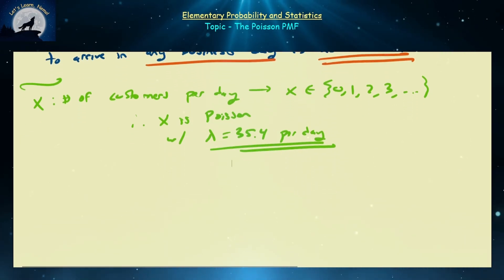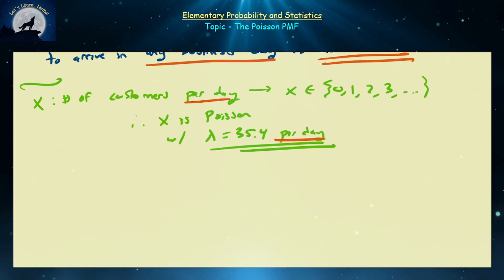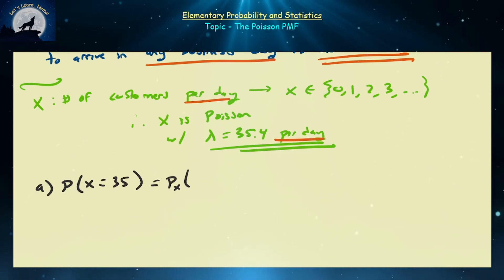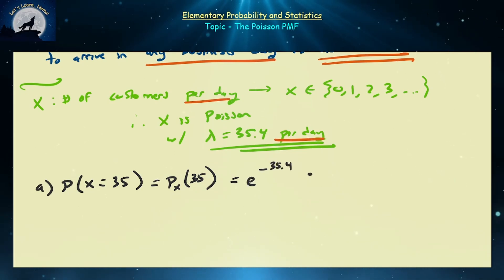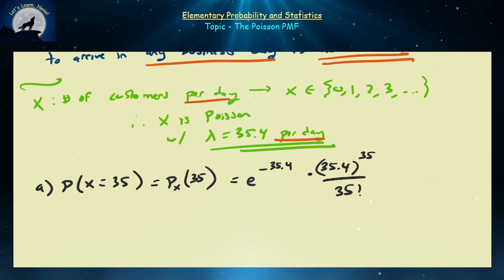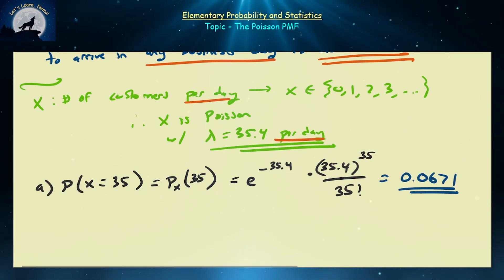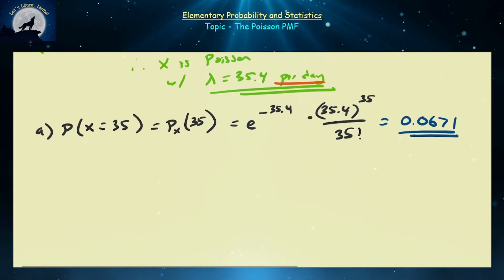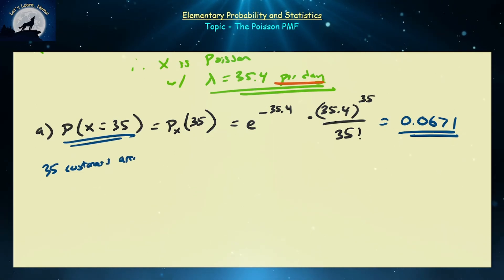What is the probability that exactly 35 customers arrive today? That's P(X = 35), written as p(35) in PMF form: e^(−lambda) times lambda^35 over 35!. Working out the math, this is approximately 0.0671 — about a 7% chance that exactly 35 customers arrive on a given day.